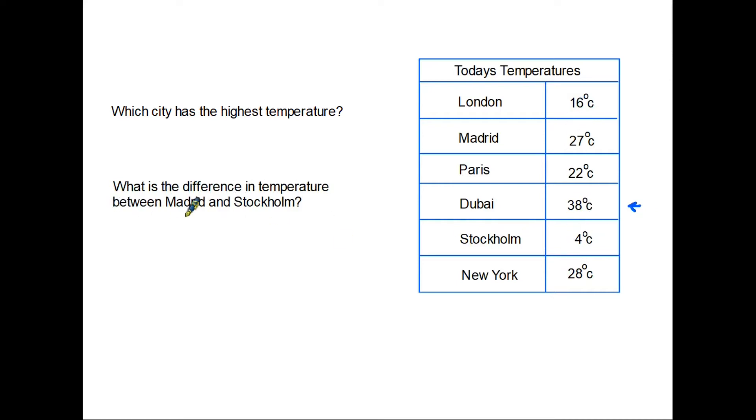Or what is the difference in temperature between Madrid and Stockholm? Again you have to find the two temperatures. Here we have Madrid, here we have Stockholm and the difference is 27 minus 4 equals 23 degrees Celsius.